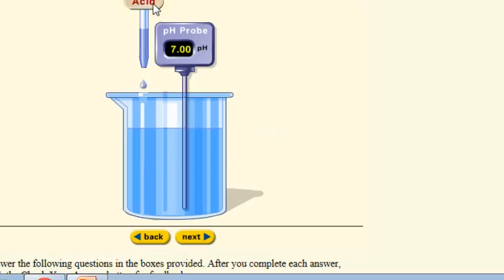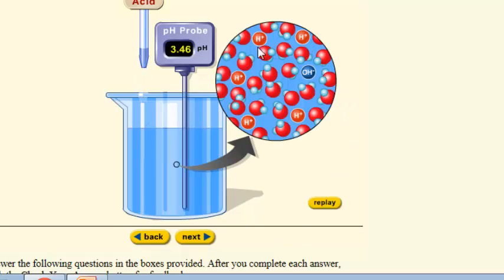Now if we add acid to this solution, you can see that the pH is going to go down. And what this actually looks like inside the beaker is that you have many more hydrogen ions than you do hydroxide ions.